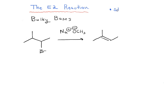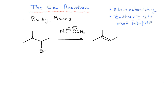One of the key things to keep track of in E2 reactions is certainly the stereochemistry of the starting material — the substrate — although that's not going to be important here for bulky bases. The other thing is that we always want to follow, as much as possible, Zaitsev's rule. We always want to form the more substituted alkene, because more substituted alkenes tend to be more stable.